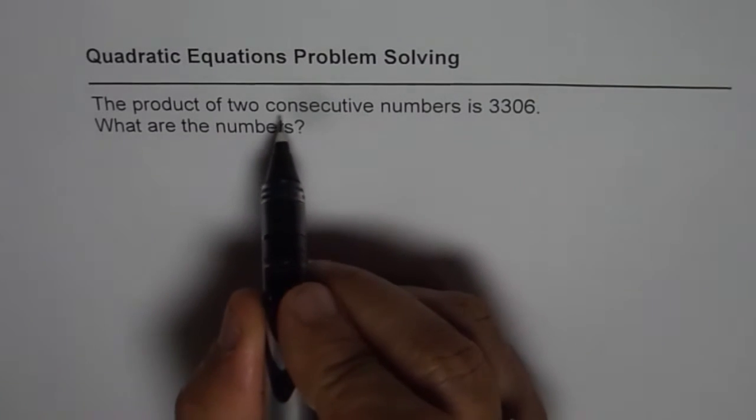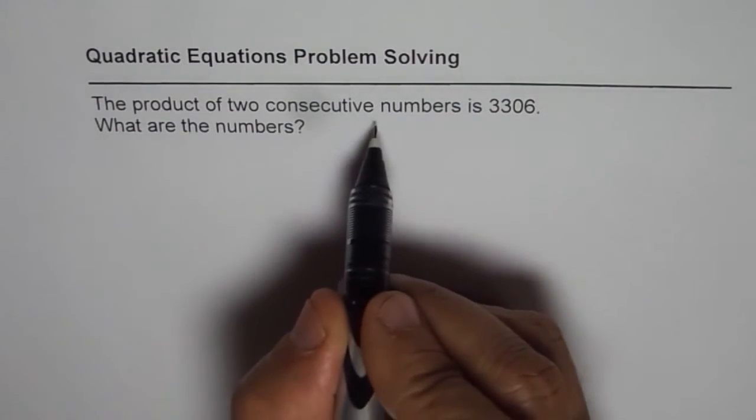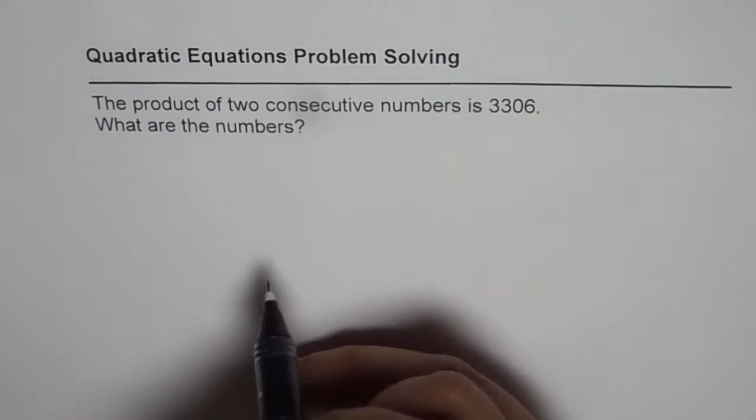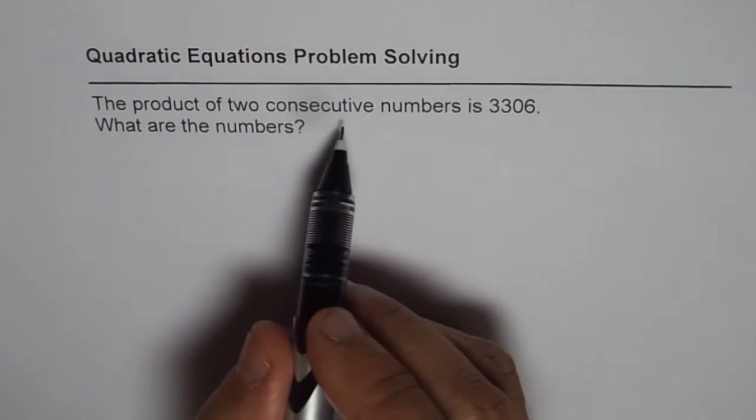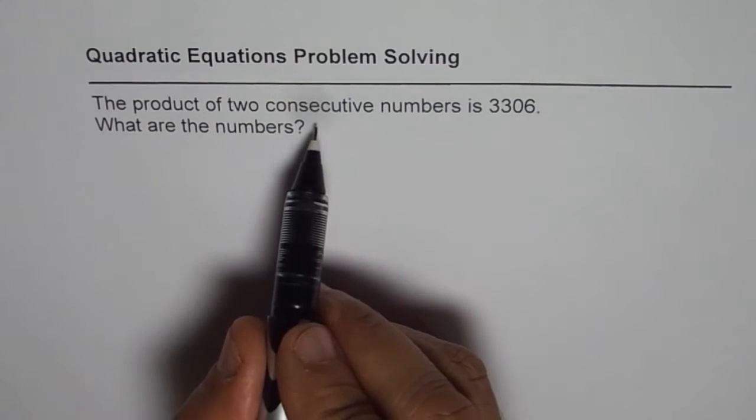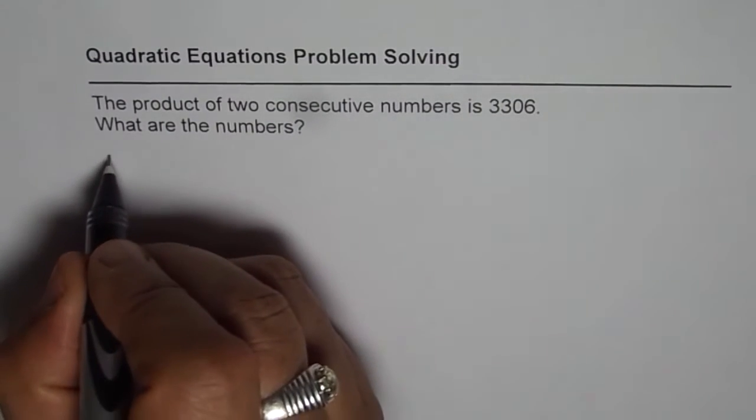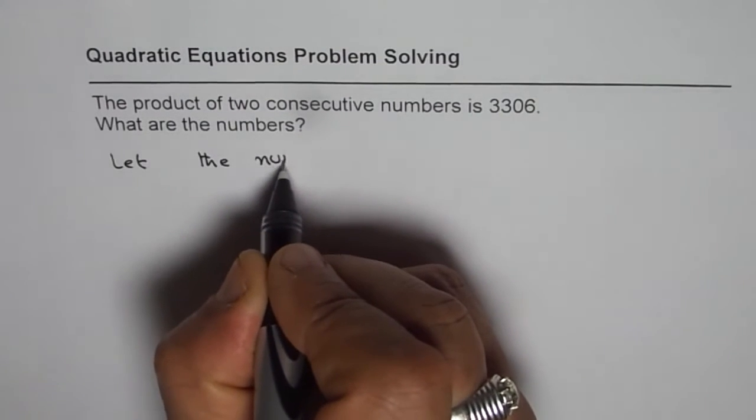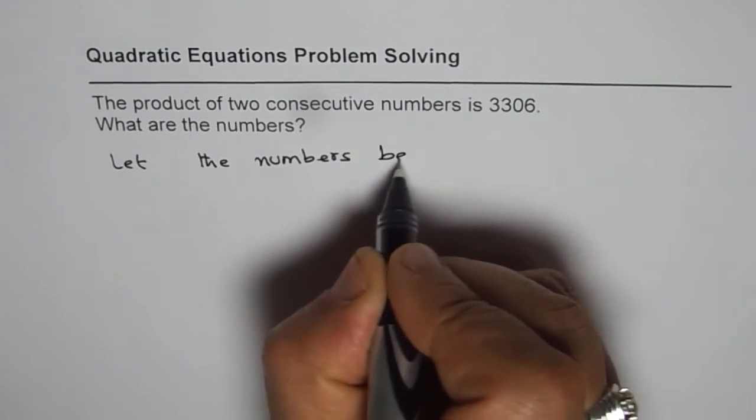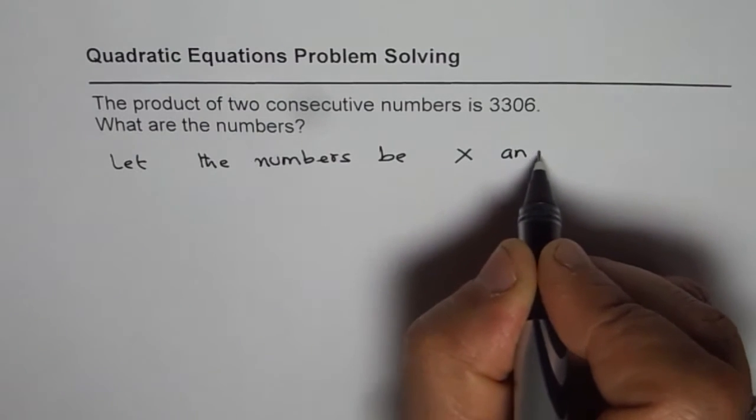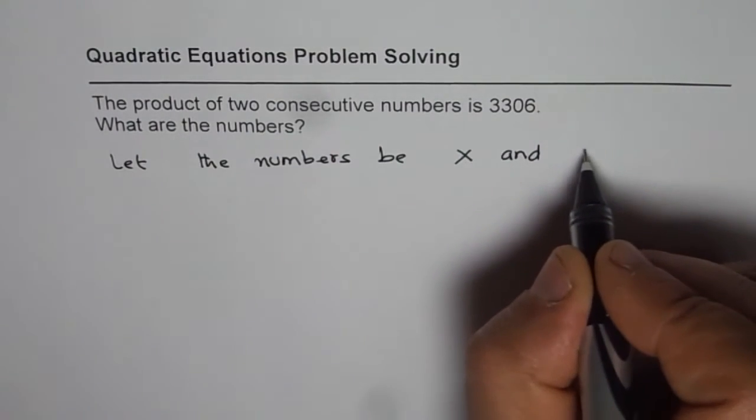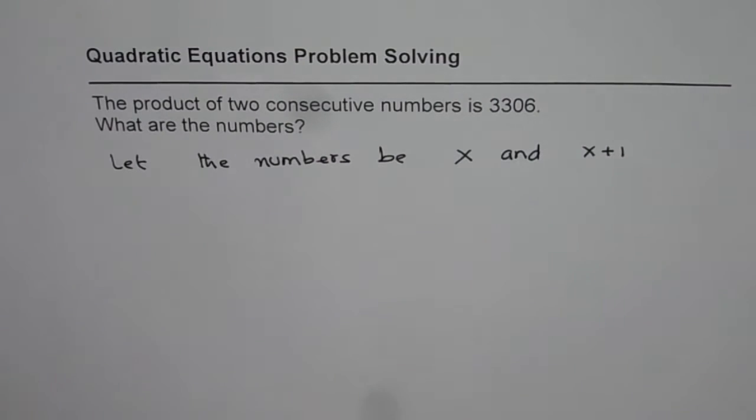Now, when we are saying consecutive numbers, that means the numbers which come together, like 2, 3, 4, 5 and so on. So let's first define our variables to represent consecutive numbers. Let the numbers be x, and if they are consecutive, the other number will be just one more than x. So the other number will be x plus 1.